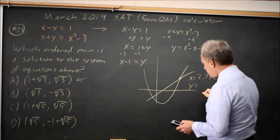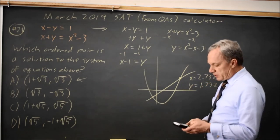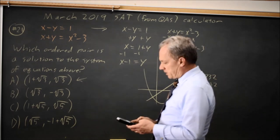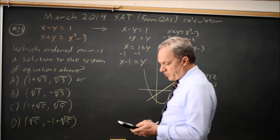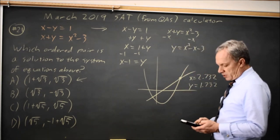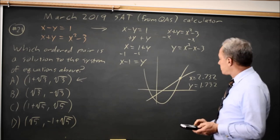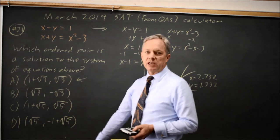And if I go back to the regular screen and say 1 plus square root of 3, that is 2.732, so x is 1 plus root 3, and plain root 3 is 1.732, so that matches choice A.